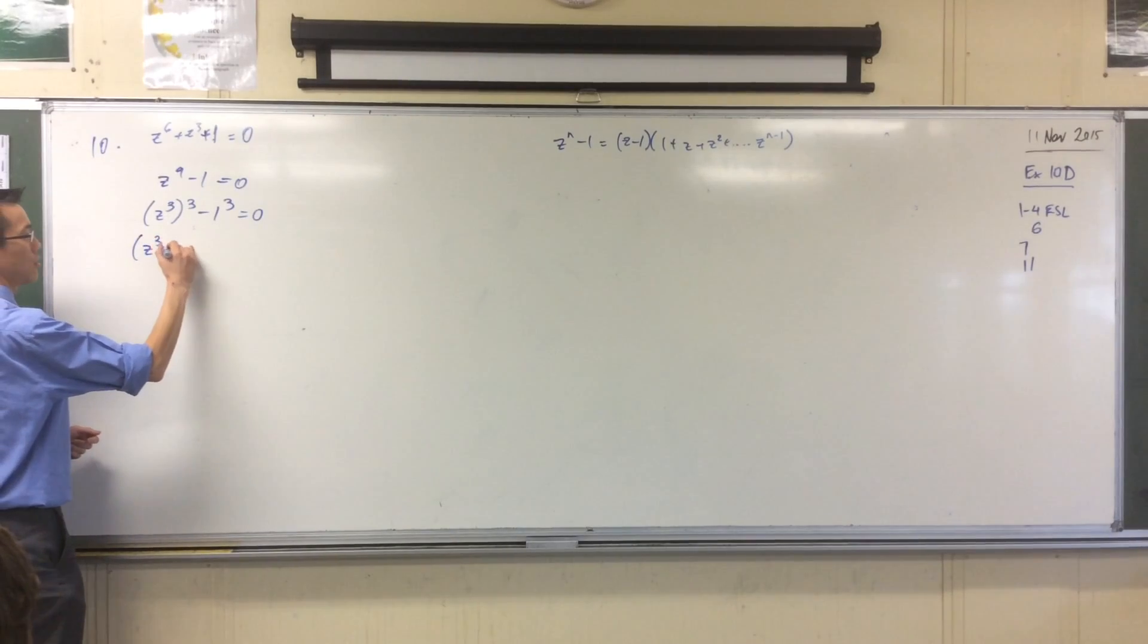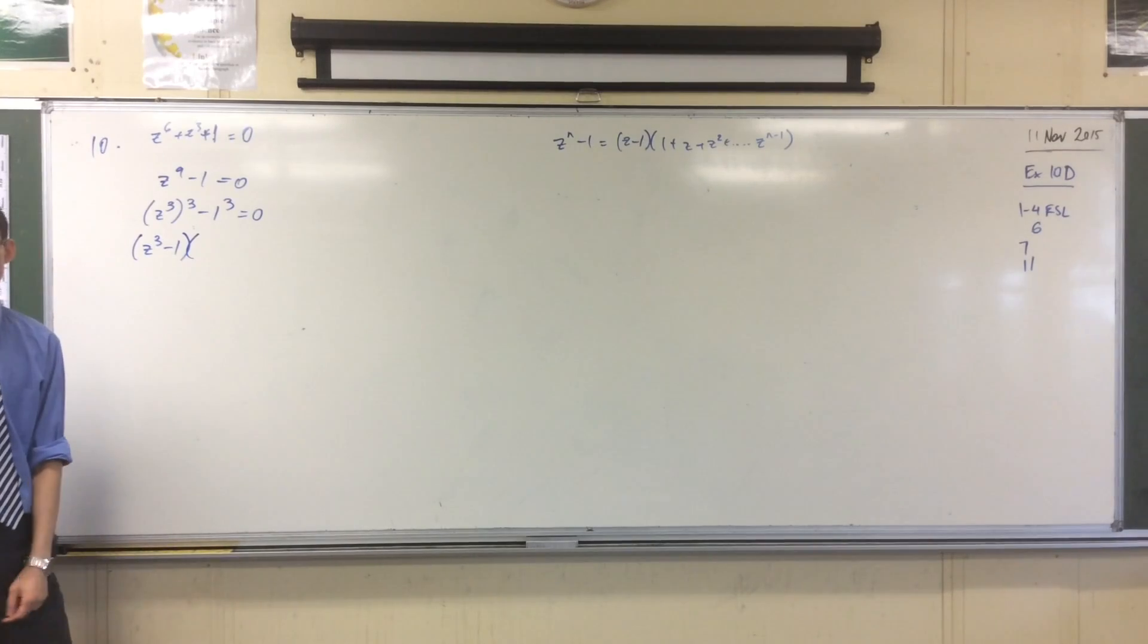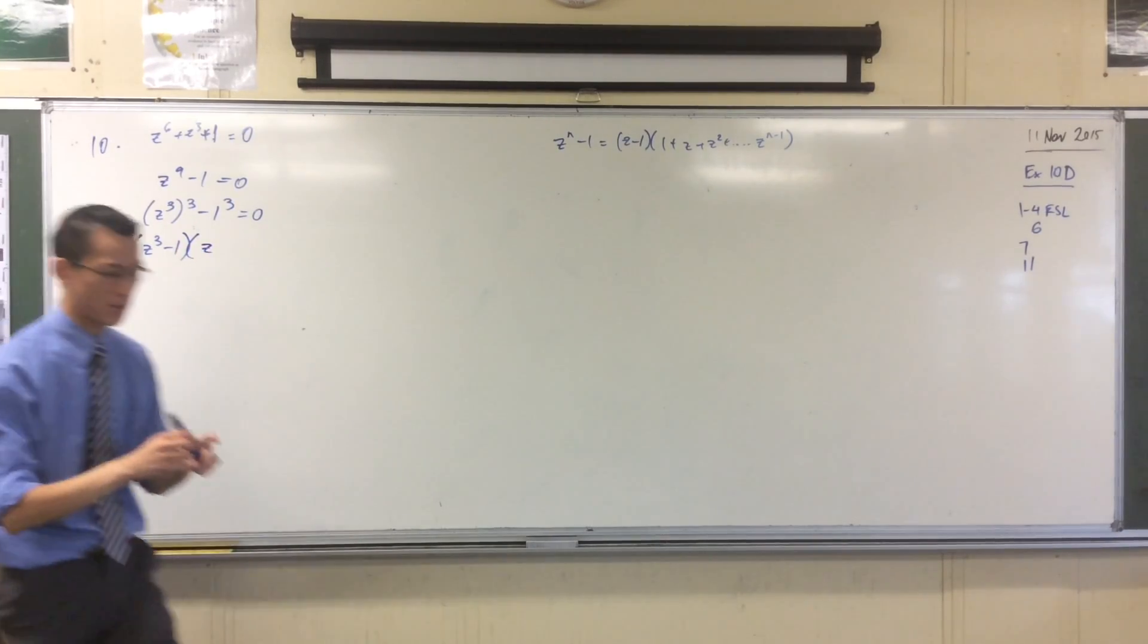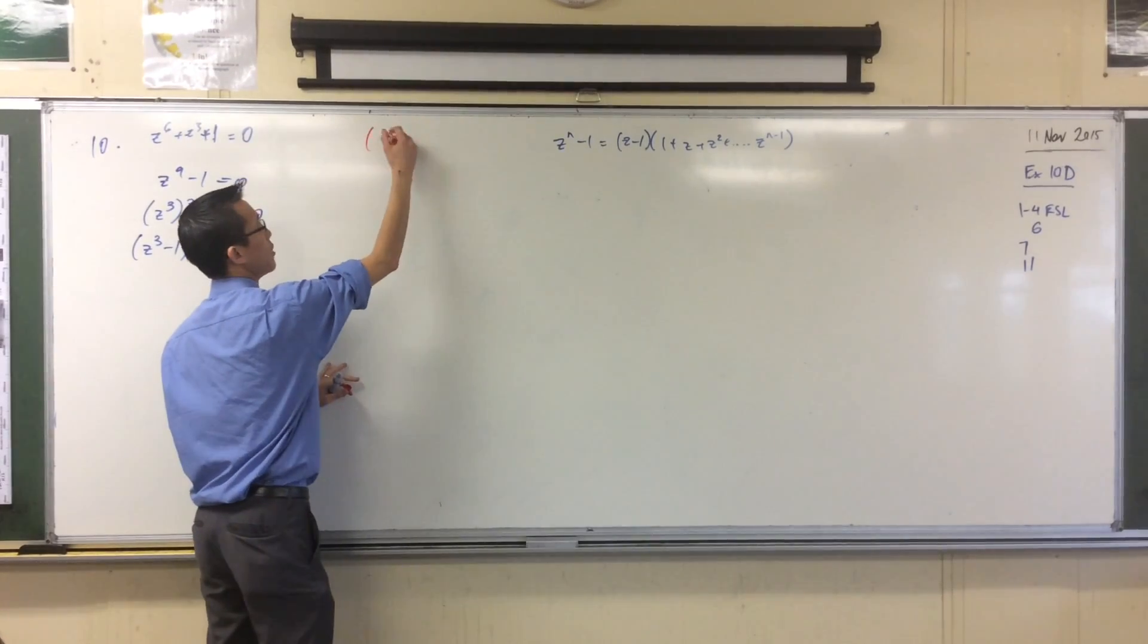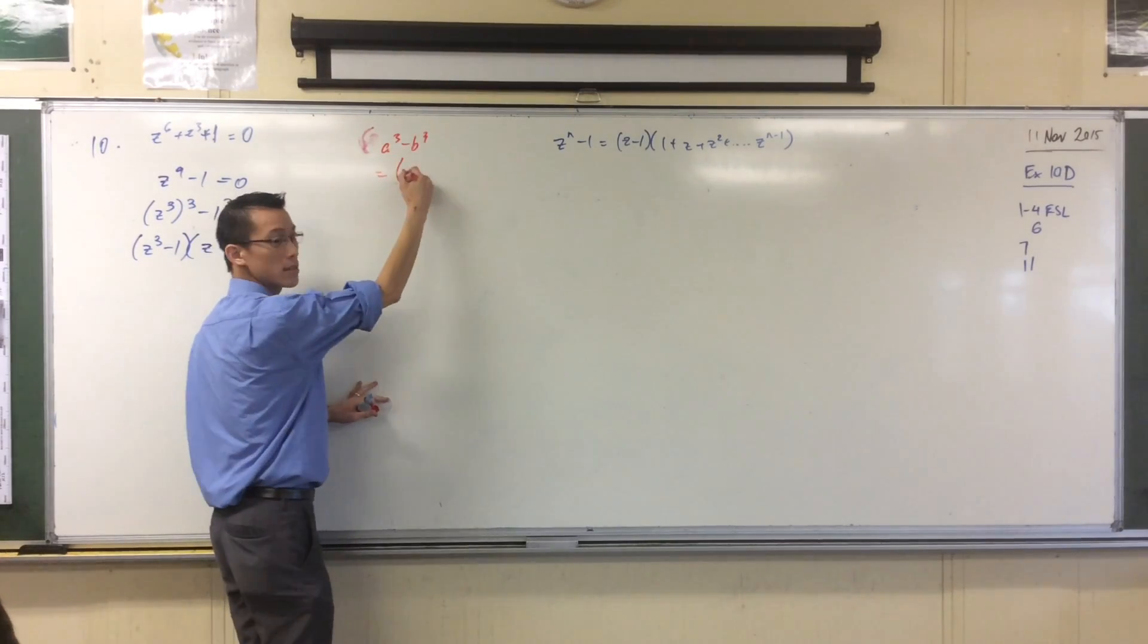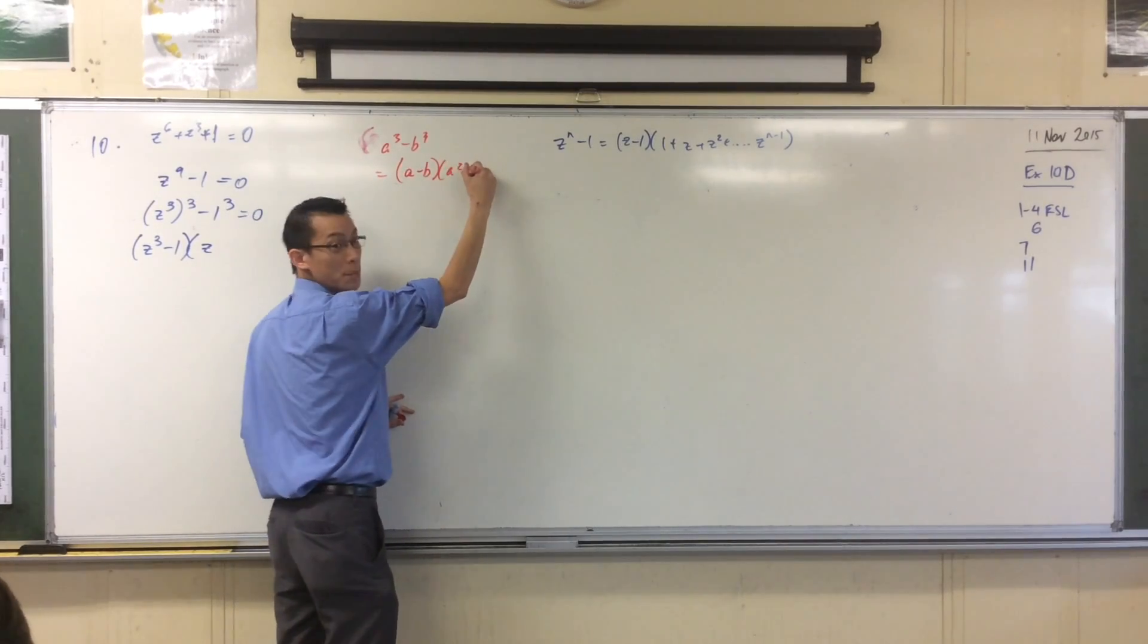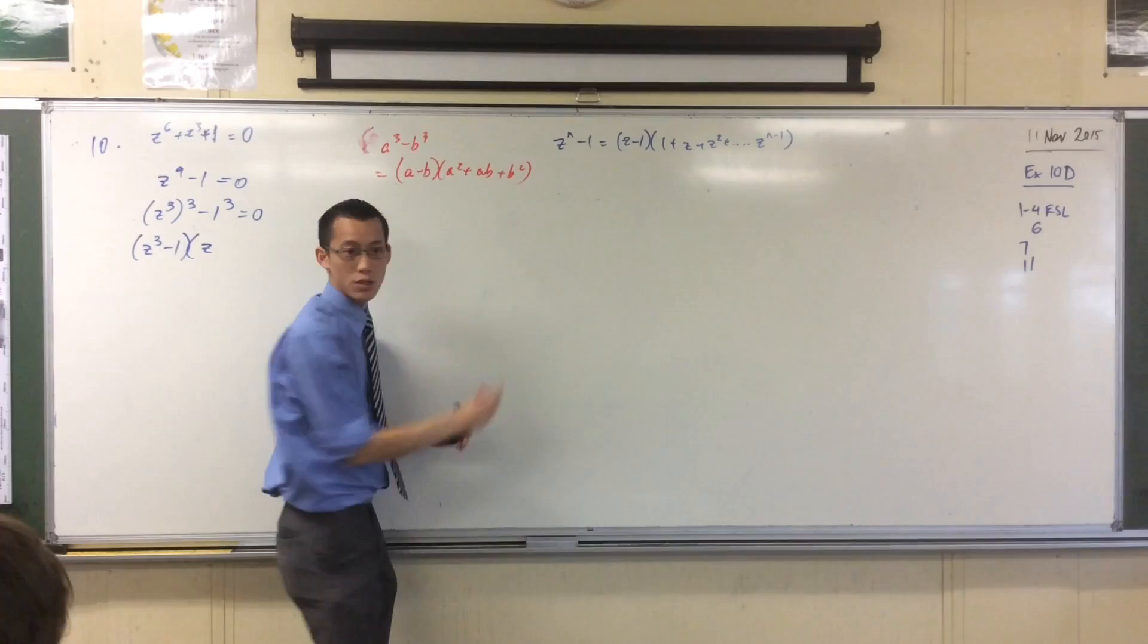Let's write the factorization for difference of cubes here. Out the front, I've got z^3 - 1. And then what do I have over here on the right-hand side? z^6. So it's usually, let me just write this on the side. Usually, my difference of cubes looks like this. If I did, say, a^3 - b^3, our usual factorization is? a - b. Same. Opposite. Opposite. a, b, always positive, right?